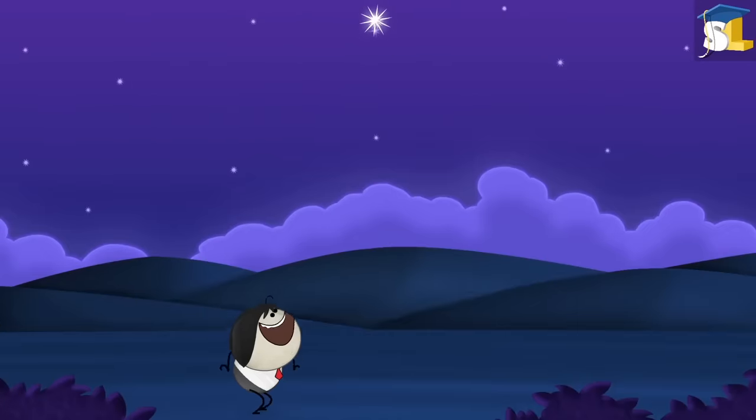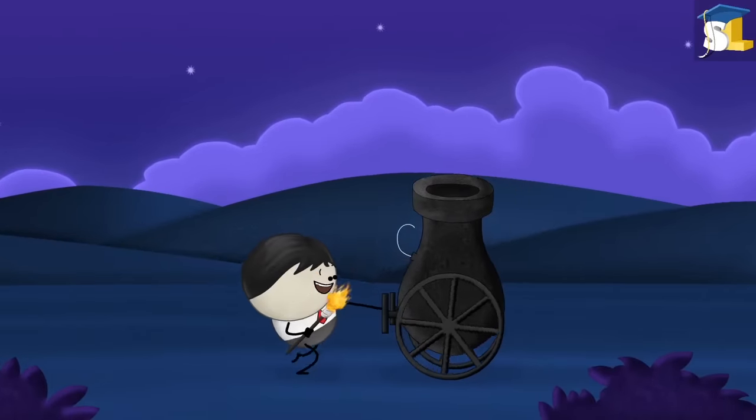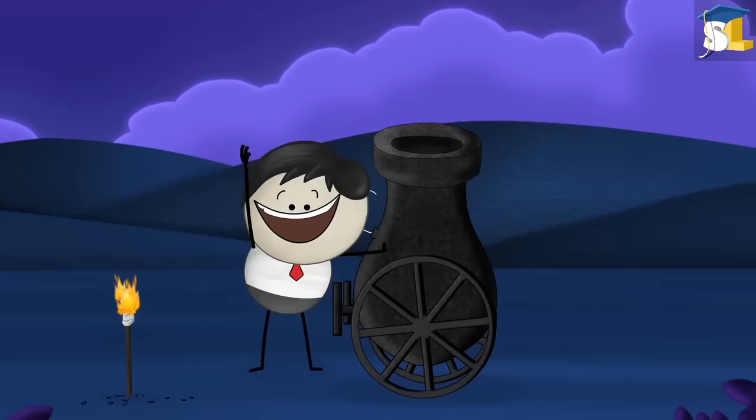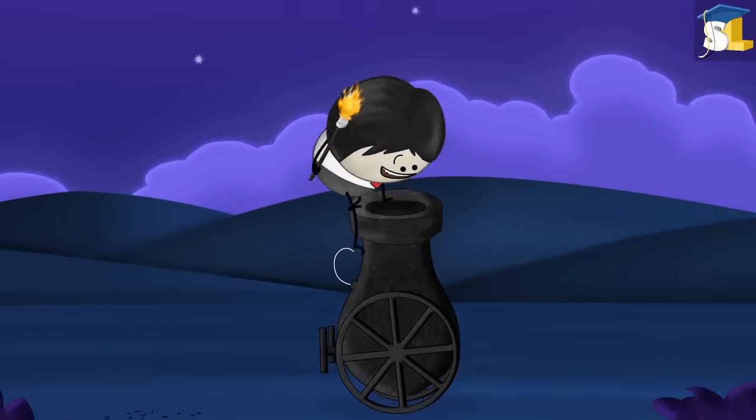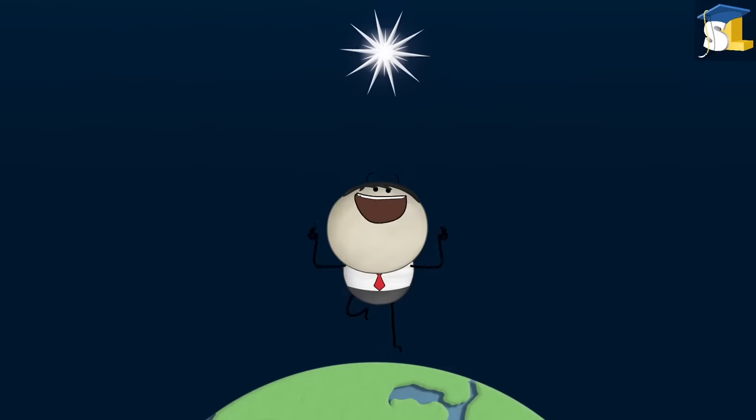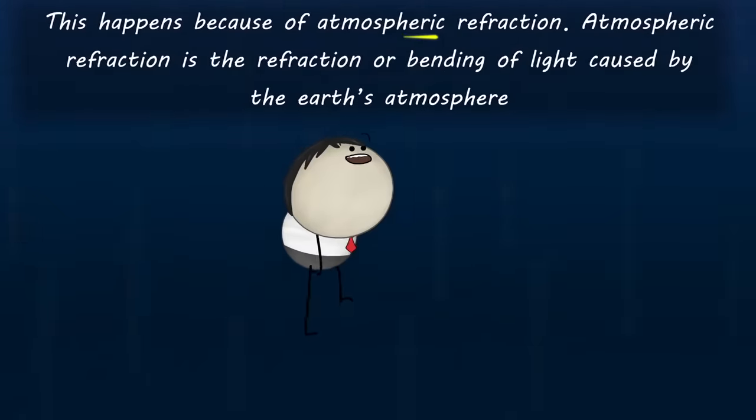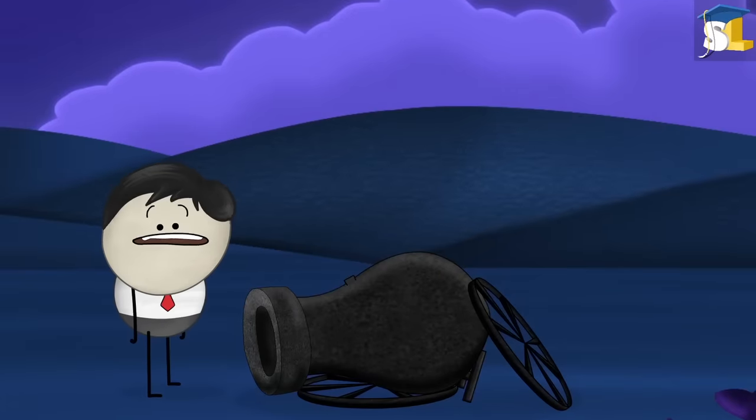Atmospheric refraction. Why do stars seem higher than they actually are? Hey. That is not the actual position of the star. Please listen. Fine. Then bear the consequences. See. I told you. Do you know why this happens? This happens because of atmospheric refraction. Atmospheric refraction is the refraction or bending of light caused by the Earth's atmosphere. It went over your head, right? No worries. Let me explain it to you in detail.